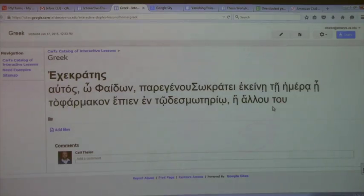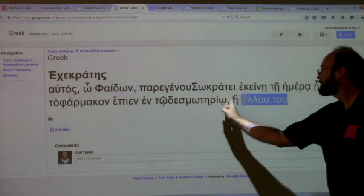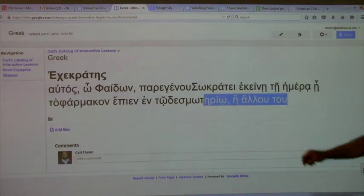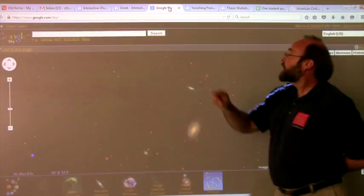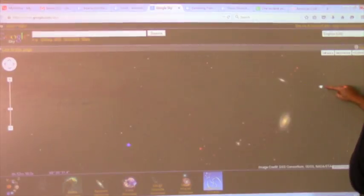For example, you can highlight text that you have displayed, or you can go to Google Sky and move the sky around.